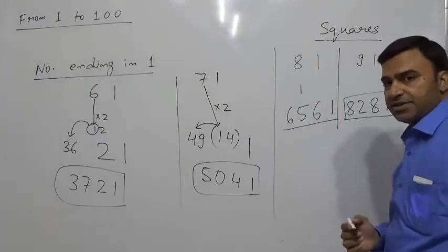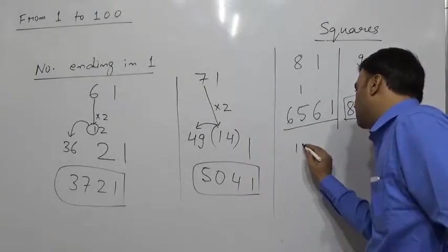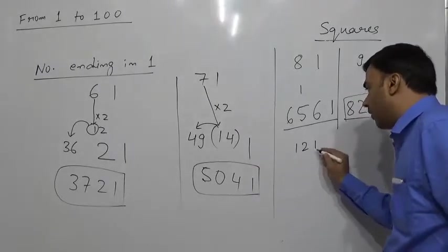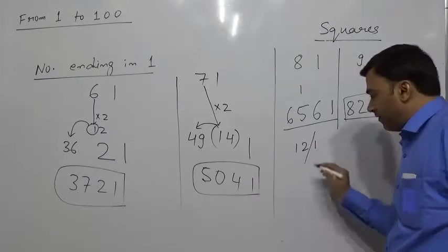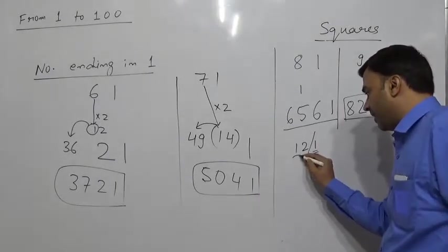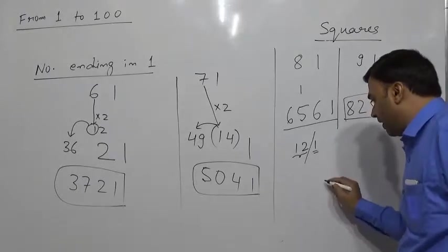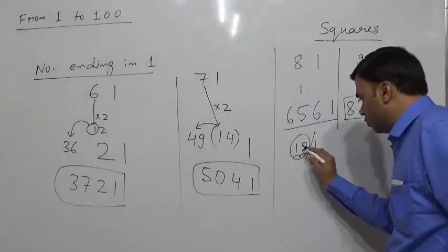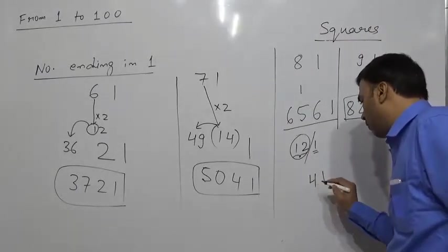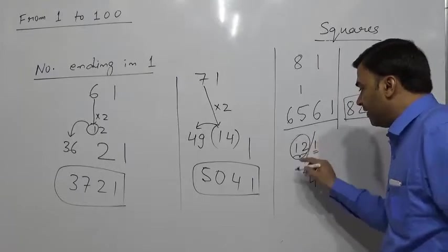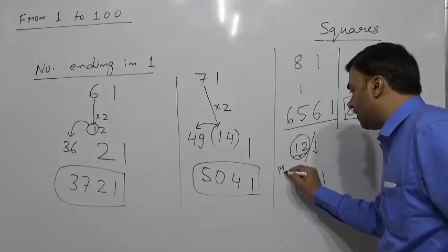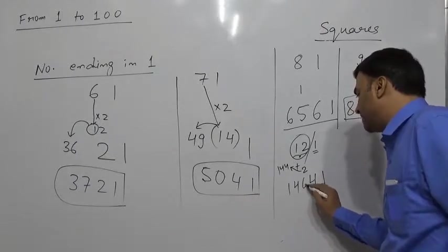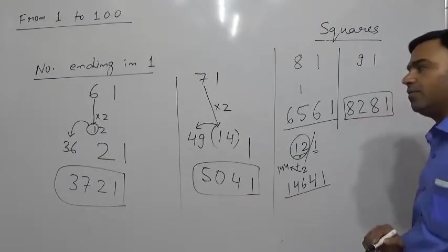Let us go above 100 and check a couple of numbers. Suppose we have to find the square of 121. We still separate the last 1 from the number, leaving 12 as the remaining part. Square of 1 is 1; 12 × 2 = 24, so 4 comes in the middle and 2 carries forward; 12² = 144, plus 2 carry = 146. The final answer is 14641.